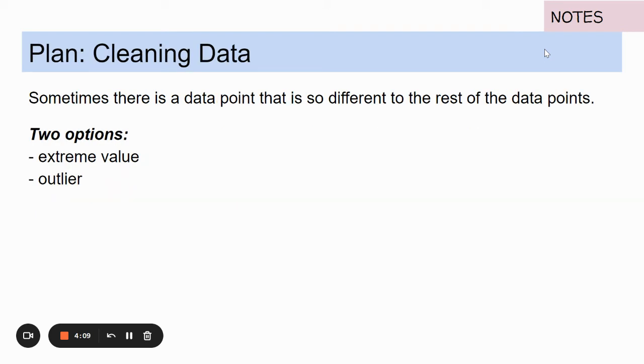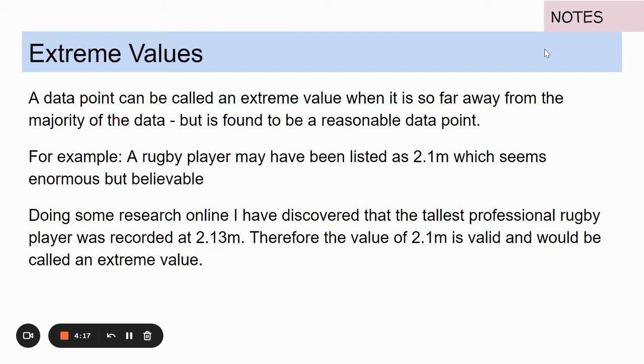When cleaning the data there are two situations. The first one is extreme values and the second one is outliers. Extreme values are actual valid data points that are reasonable but quite a long way away from the majority of the data. For example you might have a rugby player that's been listed 2.1 meters tall which seems enormous but believable. Doing some research online I found that the tallest professional rugby player was recorded as 2.13 meters. Therefore the value of 2.1 is valid and would be called an extreme value and not removed from the data set.